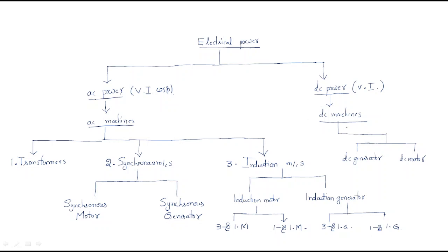DC machines are of only one type. A DC machine consists of a DC generator and a DC motor, both working on DC supply. A DC generator is a machine that generates and gives DC power as output. A DC motor is a machine that takes DC supply as input and produces mechanical output.